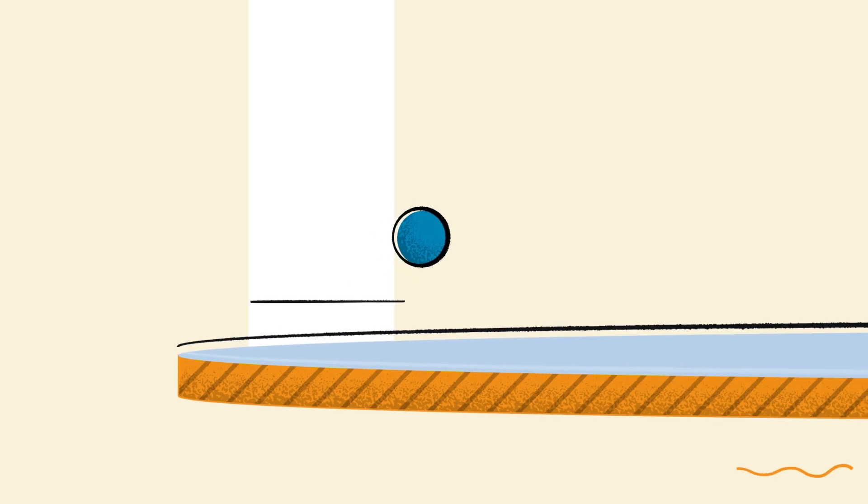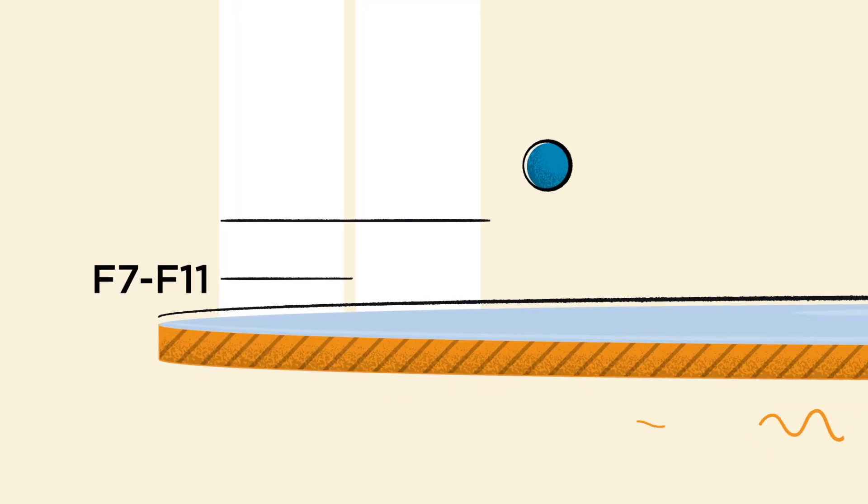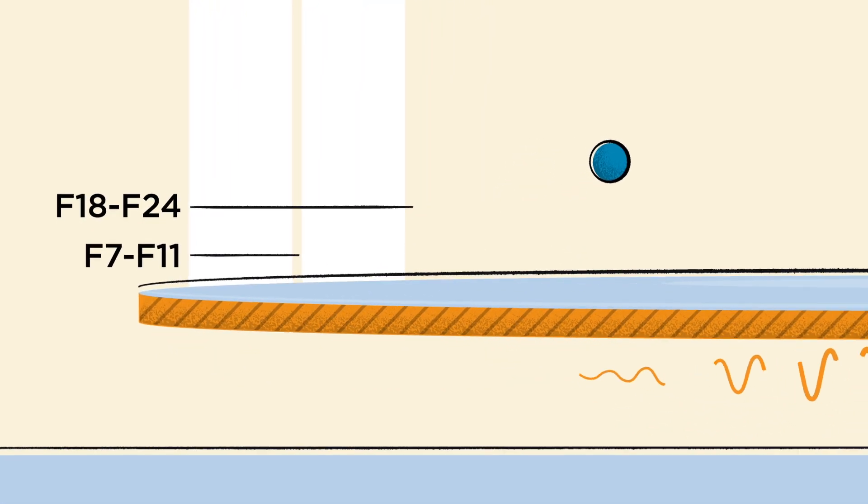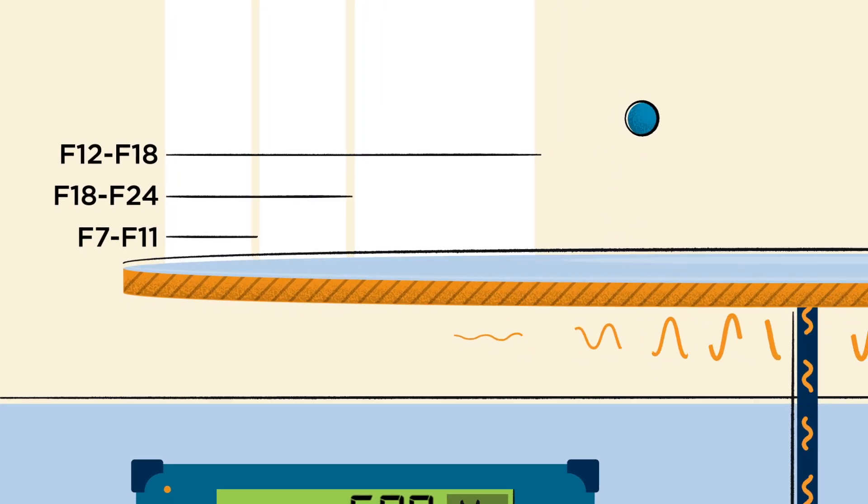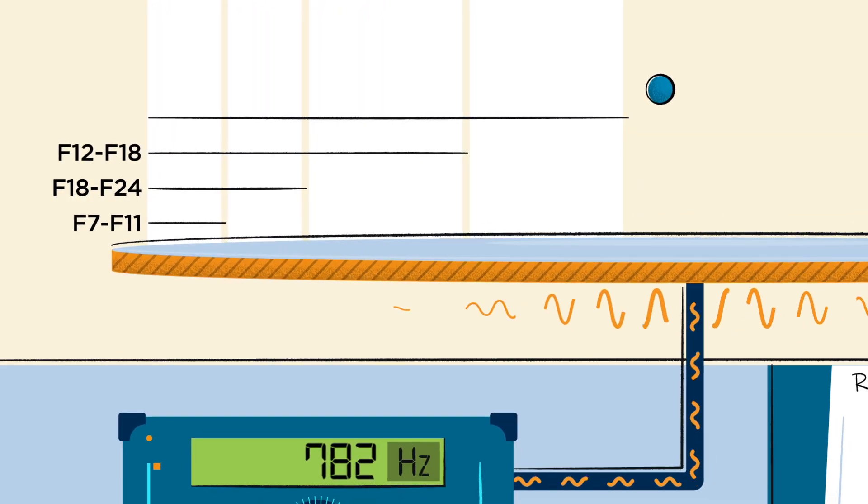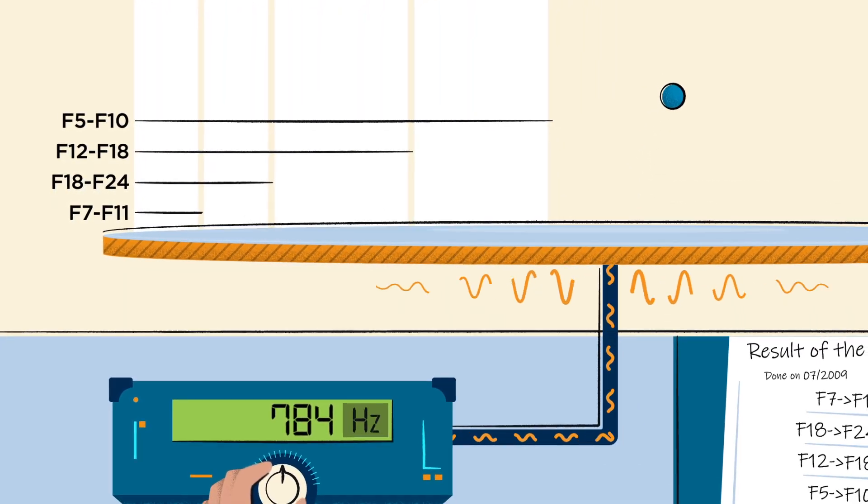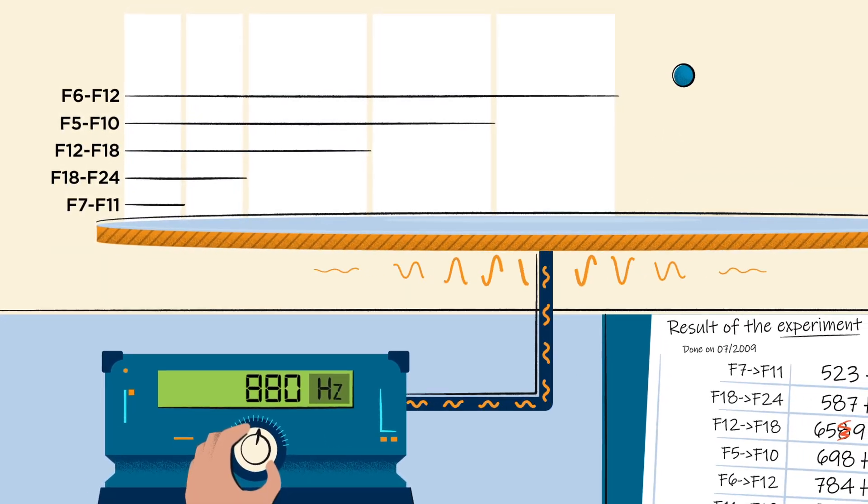When placing ultra-cold neutrons on a horizontal, highly polished mirror, they could see different quantum states. Since then, they have realized that they can make neutrons change from one quantum state to another by making the mirror vibrate at the right frequency.